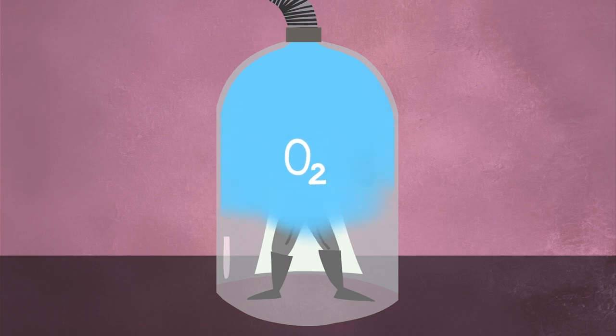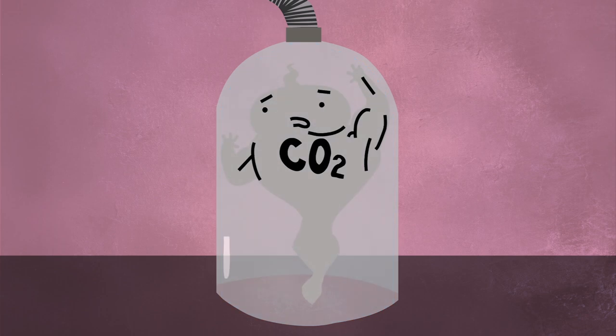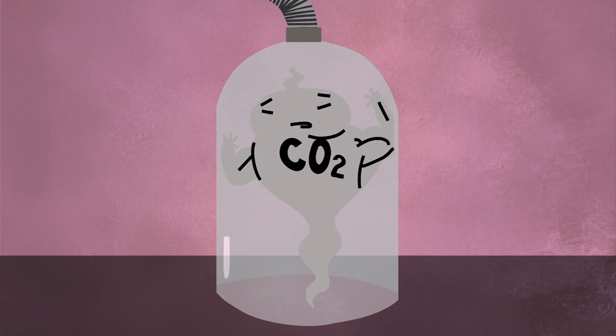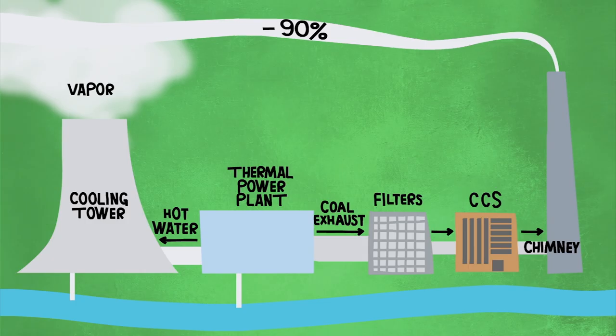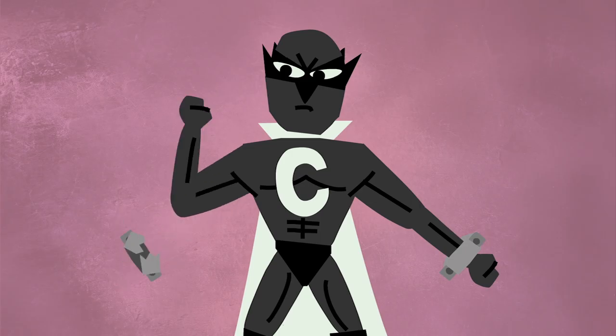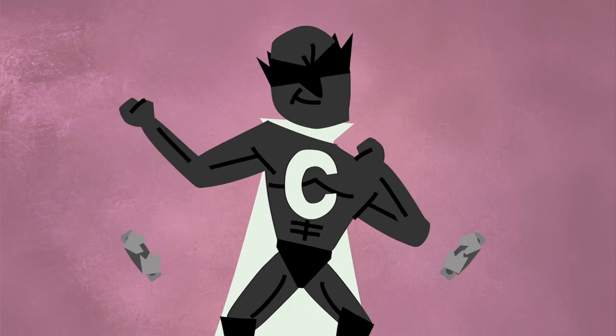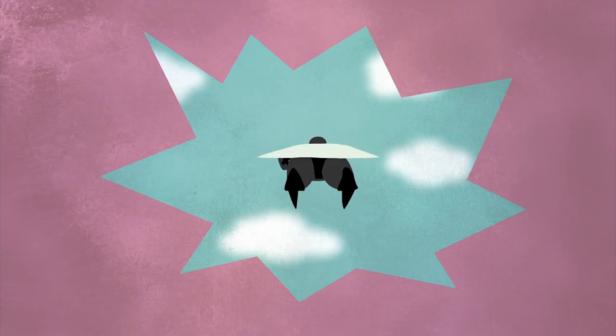A third technique exposes coal to pure oxygen, instead of burning it in air. This creates exhaust gas with higher concentrations of carbon dioxide, which makes it easy to isolate and to banish to the chasms below. All this can reduce emissions at a power plant by up to 90%. But as with any superhero struggling with their destructive powers, it takes a lot of effort to switch over from the dark side.